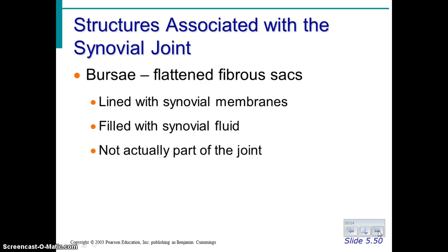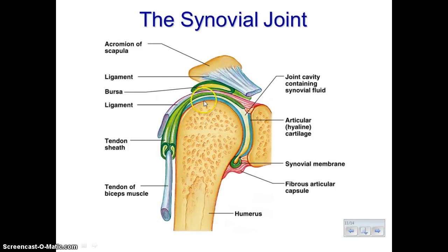An additional structure that some synovial joints have is a bursa sac. That's basically a flattened fibrous sac filled with fluid — it has a synovial membrane to line it and fluid inside. It's actually not a part of the joint itself, but that doesn't mean it's not important or that it can't get injured. It functions by keeping two bones apart.